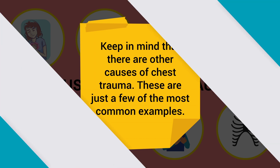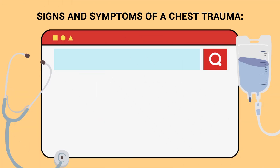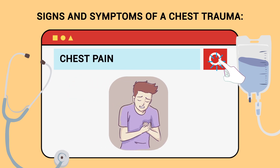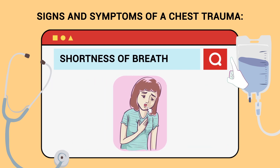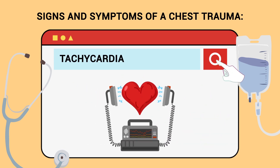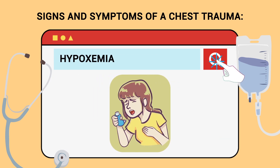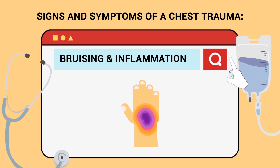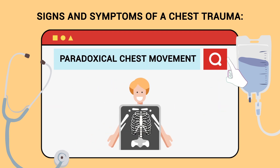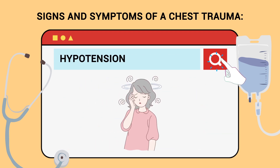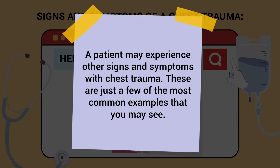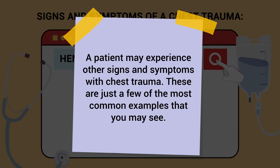Keep in mind there are other causes of chest trauma — these are just a few of the most common examples. The signs and symptoms of chest trauma include chest pain, shortness of breath, tachypnea, tachycardia, cyanosis, shallow breathing, hypoxemia, bruising and inflammation, paradoxical chest movement, pneumothorax, hypotension, and hemoptysis.